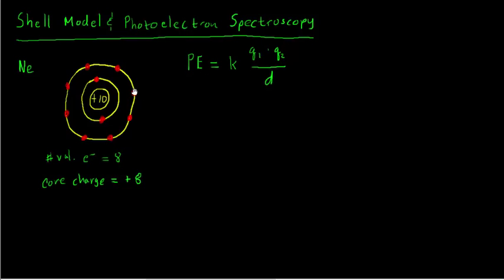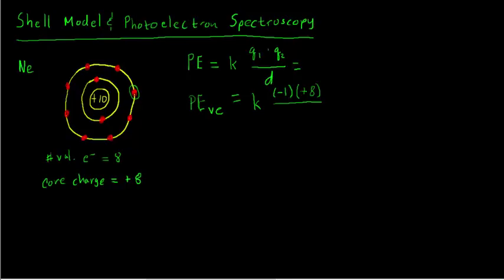If we're thinking about one of these outer valence electrons, Q1 is going to be the charge on that electron, so minus one. We're looking at the outer shell, so the potential energy for a valence electron PE_VE equals K times minus one times the effective charge it interacts with. That electron is attracted to the nucleus, but the nucleus is screened by the two inner shell electrons, so it's attracted to the plus eight core charge. And it's some distance from the nucleus — the outer shell is further away than the inner shell, so we need two different distances in this model.